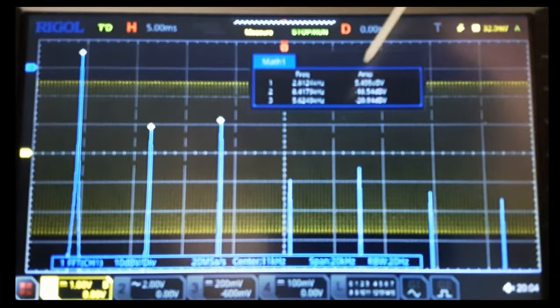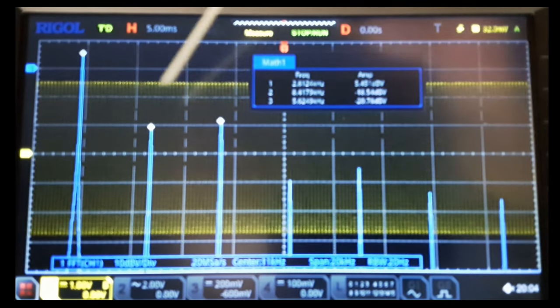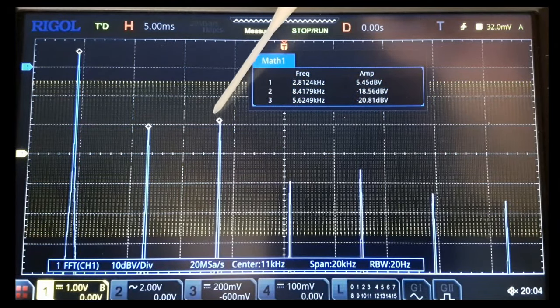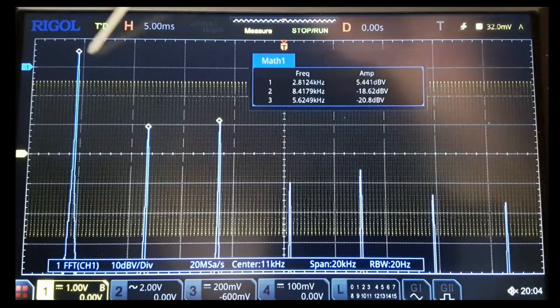So we now have plus 5 dB here, minus 18 on the second harmonic. Notice how much the third harmonic has come up. It's actually, actually this is the third harmonic. That's that number right there because it takes the peaks.